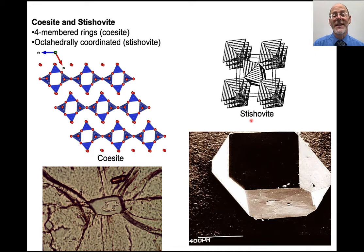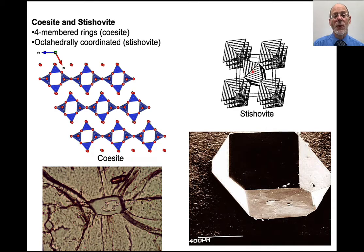Stishovite is totally different — it has octahedral coordination. If you remember back to one of the earlier lectures, I mentioned the structure of rutile. Rutile has chains of octahedra linked together in the same form, so there is a very similar structure between stishovite and rutile. Instead of TiO2 for rutile, this is SiO2 for stishovite. Having octahedrally coordinated silica is very unusual and occurs only at ultra-high pressures.